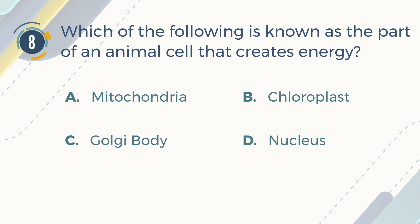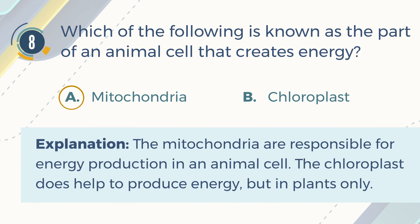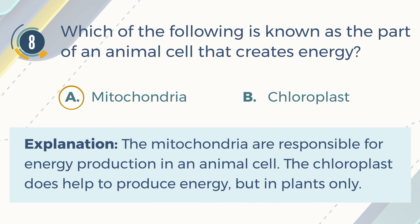The correct answer is A. Mitochondria. Explanation: The mitochondria are responsible for energy production in an animal cell. The chloroplast does help to produce energy, but in plants only.